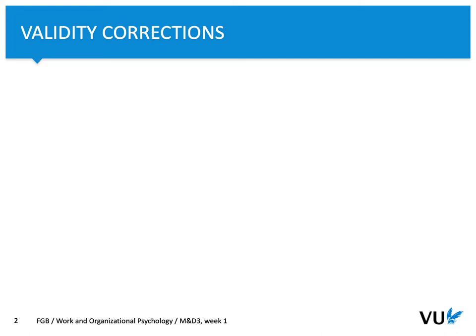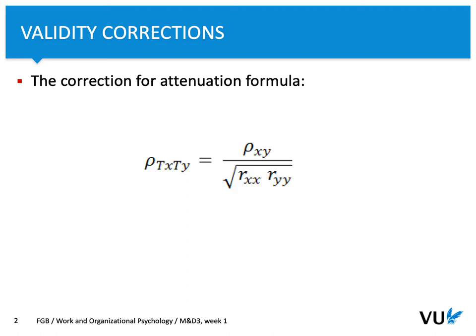The first type of validity correction is correction for attenuation. Let's take a look at the formula first. Within this formula, the outcome is the correlation of a measure if we assume that both measures are perfectly reliable. In other words, this correction assumes that if the reliability coefficients for both measures are perfectly reliable, so the reliability coefficient for measure x and for measure y would be 1.